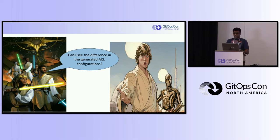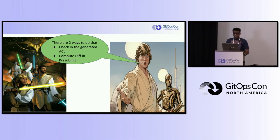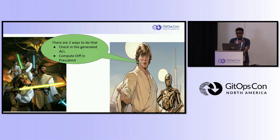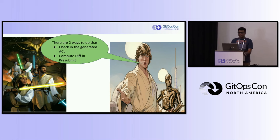Let's discuss how to check diffs in generated ACL configs, which helps understand the impact radius of changes. One approach is to check in the generated ACL, where the changelist author chooses to include the config alongside ACL policy definitions in the Git repo. The diff would then be directly visible to the reviewer during code review. Pre-submit checks would verify that the checked-in ACL matches the generated ACL, ensuring consistency and accuracy, and providing transparency about exact changes to be deployed.